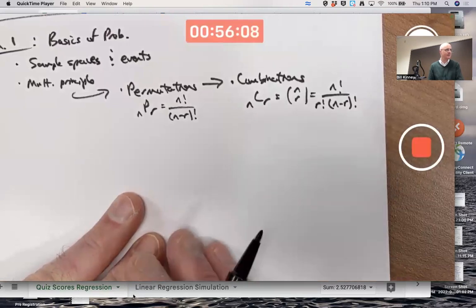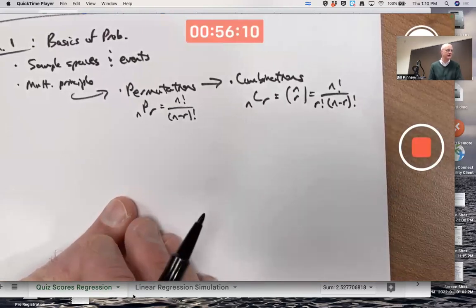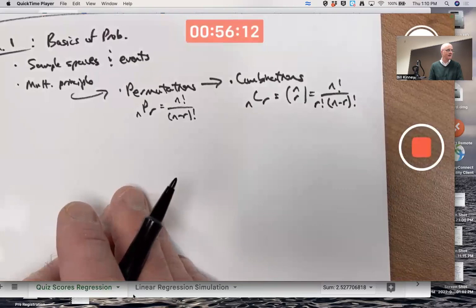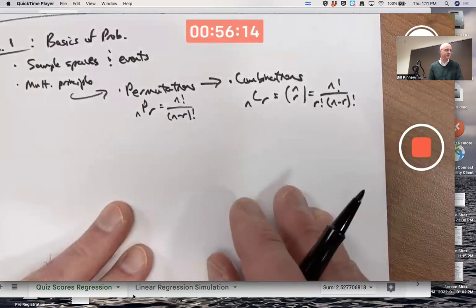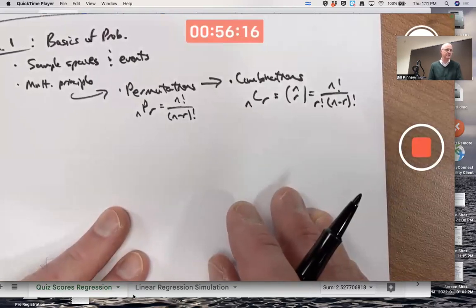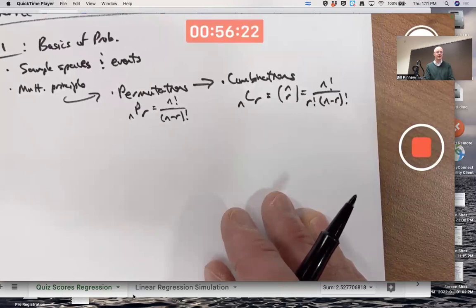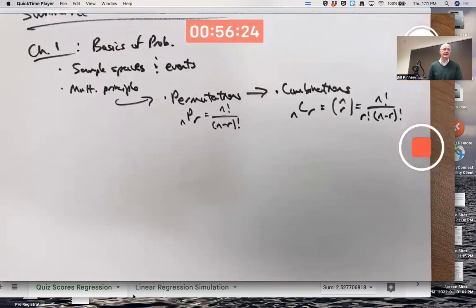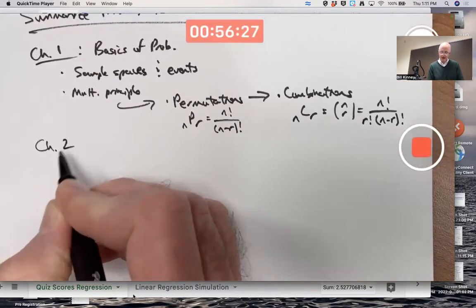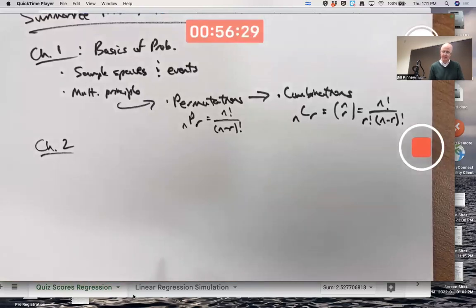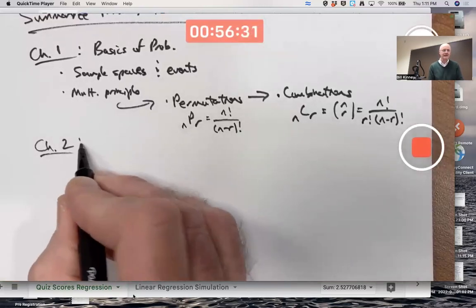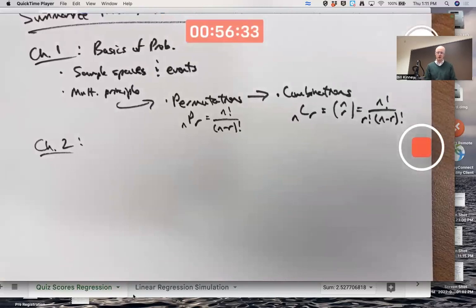It's like picking for a club, a president, treasurer, and secretary. The order matters versus just picking three people to go to a conference. The order doesn't matter. Sometimes problem solving is tricky, so you've got to practice. But remember, I've been giving you possibly problems like on the old exams, so you've got a good idea of what to practice.